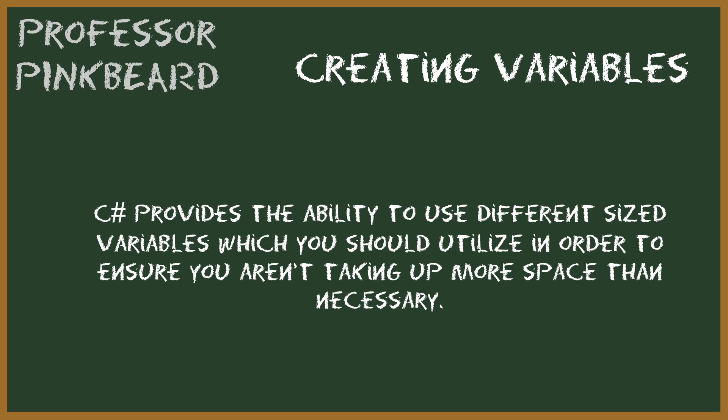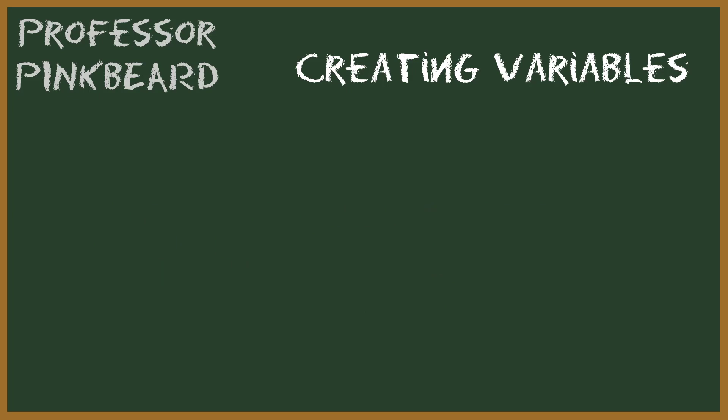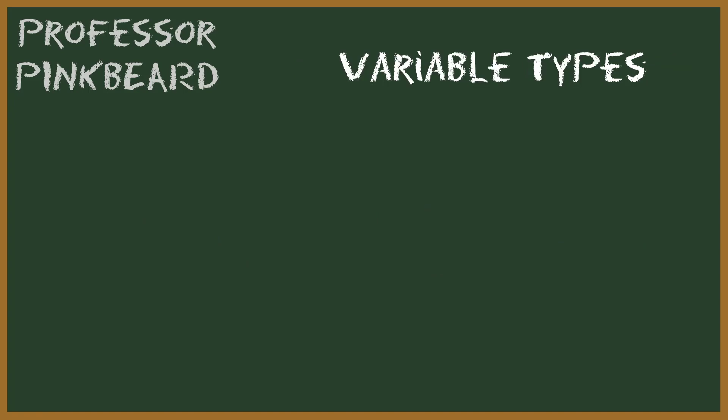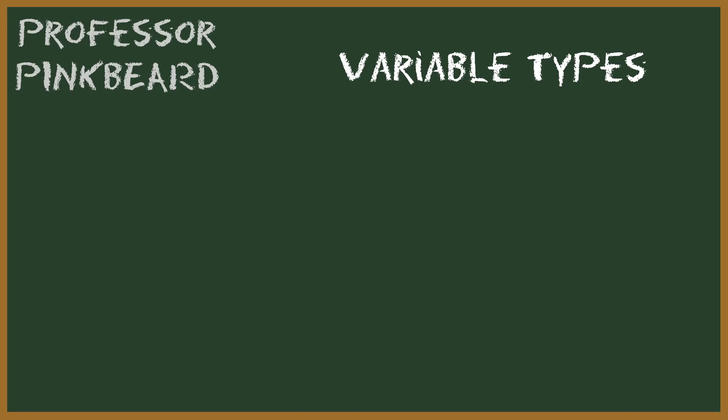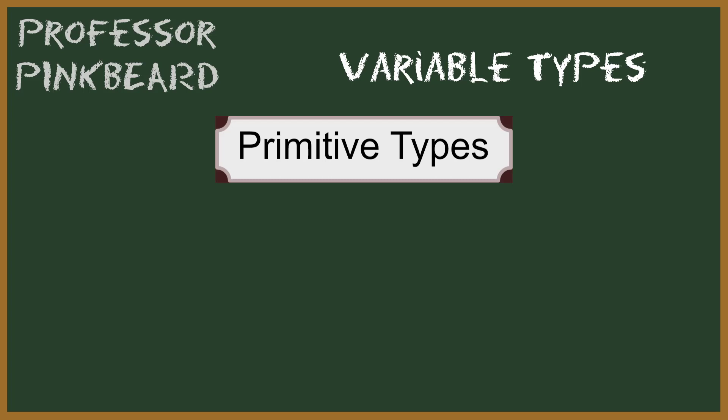Given that, there are some different variable types that we can use to more accurately manage data in our programs. In general, there are two classifications of variables: the primitive data types and objects. We will not be talking about objects too much in this course, with the exception of the string variable. We'll cover objects in a future course. But for now, let's take a look at the categories that make up the primitive data types.